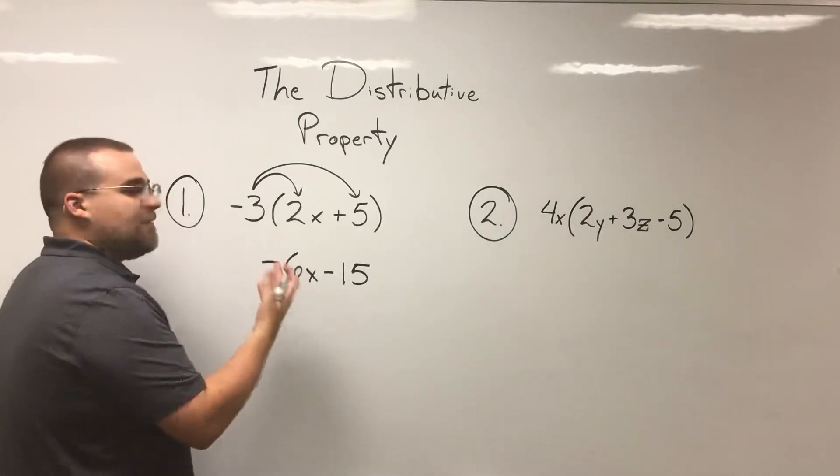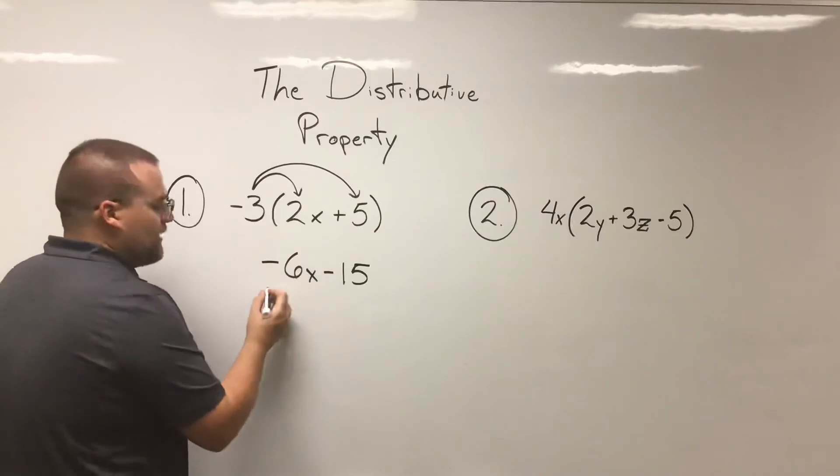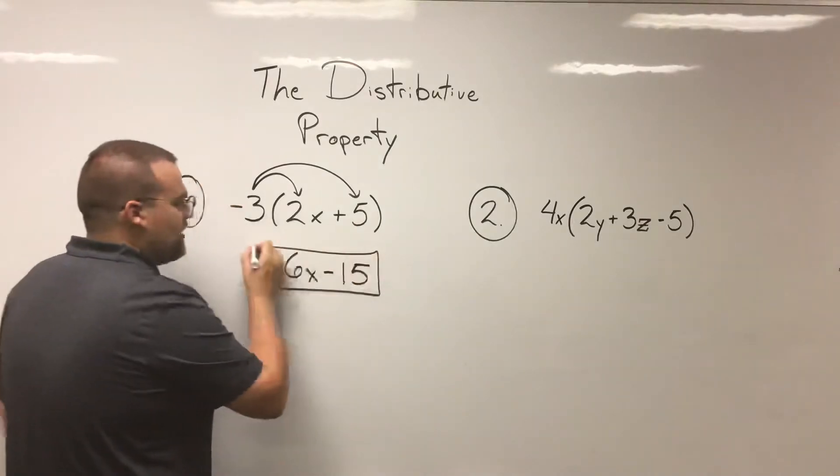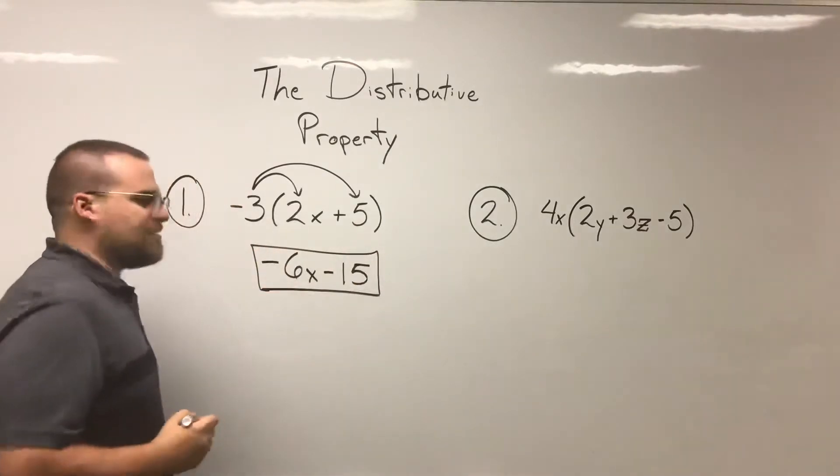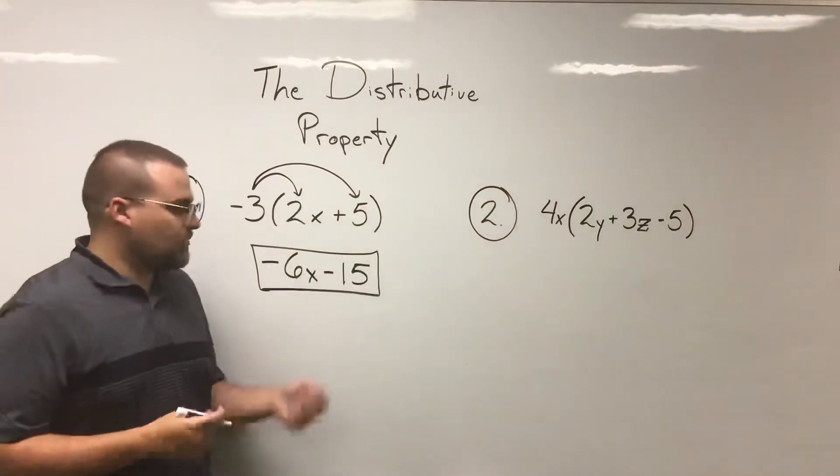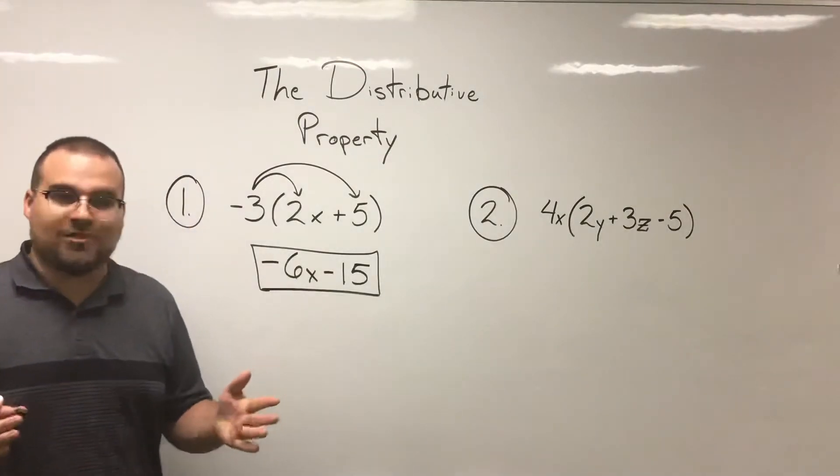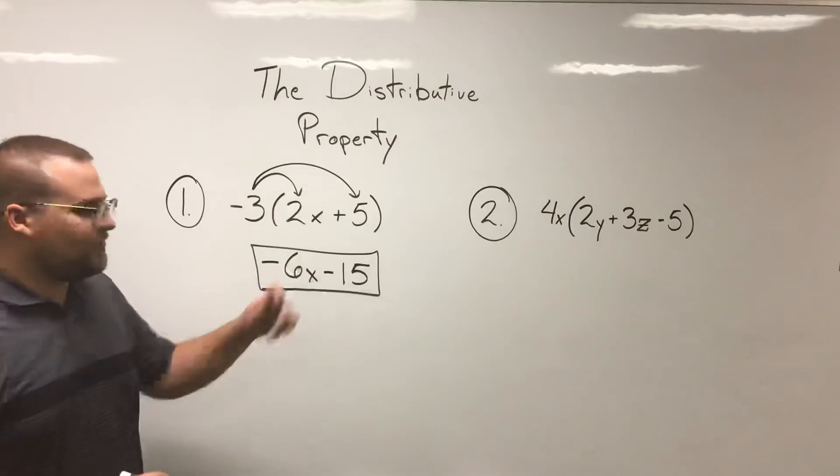So ultimately, what I end up getting after distributing my negative three is negative 6x minus 15. And there we go. I've distributed. I succeeded. Let's take a look at number two.